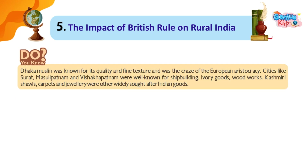Do you know? Dhaka muslin was known for its quality and fine texture and was the craze of the European aristocracy. Cities like Surat, Masulipatnam and Visakhapatnam were well known for shipbuilding. Ivory goods, woodworks, Kashmiri shawls, carpets and jewellery were other widely sought-after Indian goods.